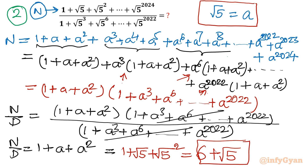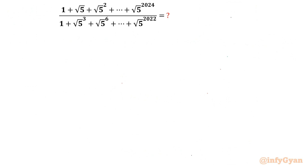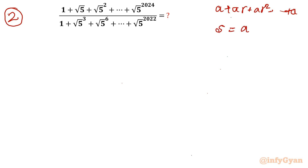I hope you liked this factorization method. The second way of solving is the conventional method using the finite GP sum formula. We know that for a + ar + ar² + ... + ar^n terms, the sum = a·(r^n − 1)/(r − 1) where |r| > 1. We will apply the same formula. Let me consider √5 = r here.